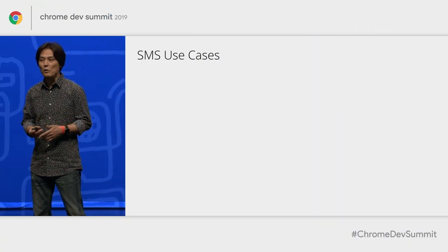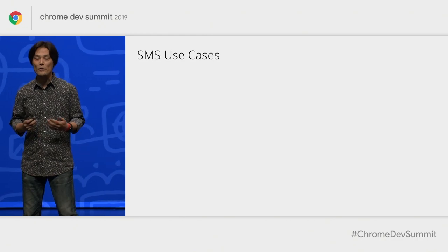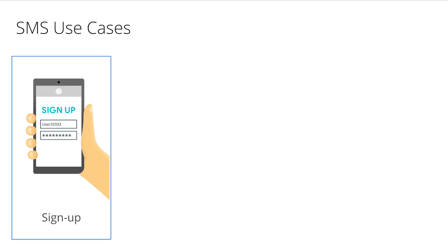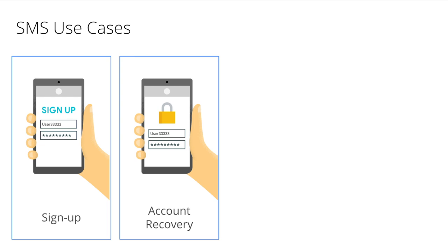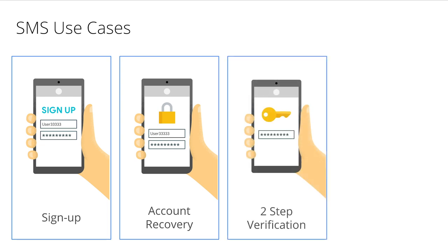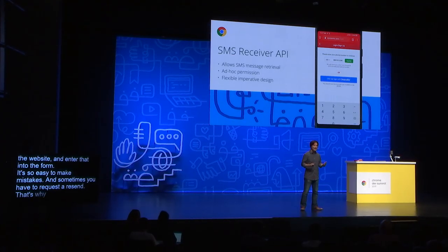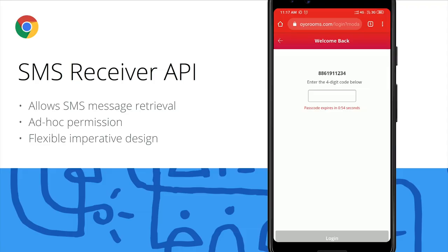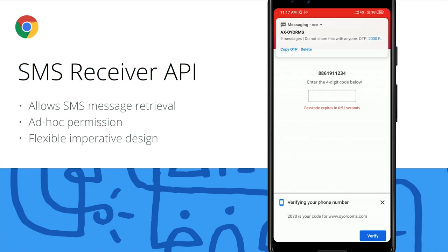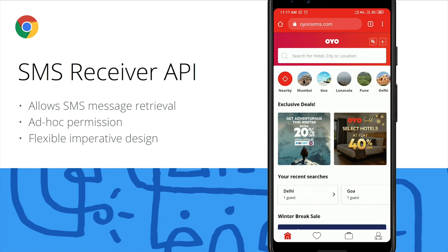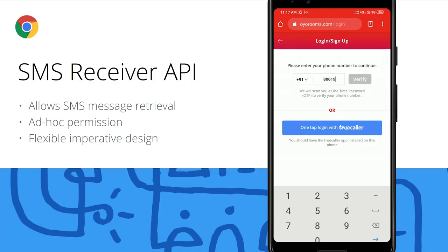There are a lot of online services that heavily rely on phone numbers, especially as a way to send SMS messages. These services are using SMS to let users sign up, help users recover their accounts, increase user security with two-step verification, or confirm payments. That's why we are proposing a new API called the SMS Receiver API. Web developers can use the SMS Receiver API to let the browser receive the SMS message, extract the OTP, and enter the OTP on behalf of the user.